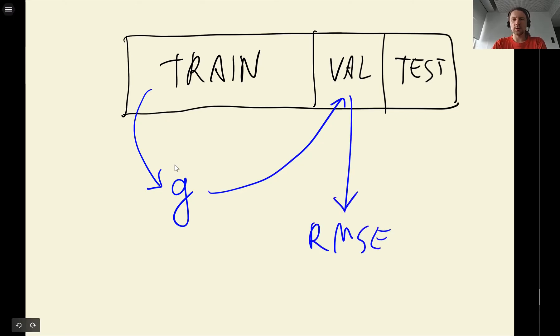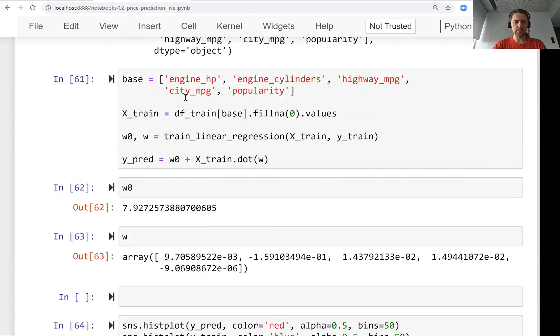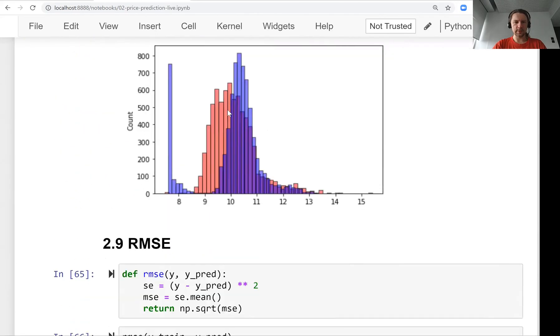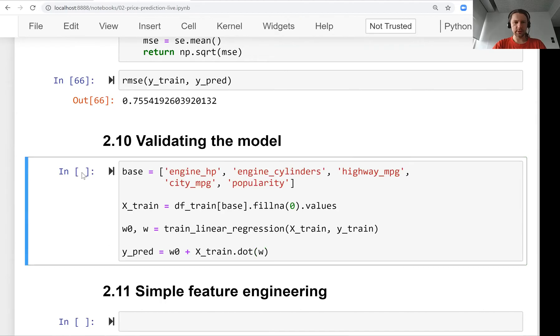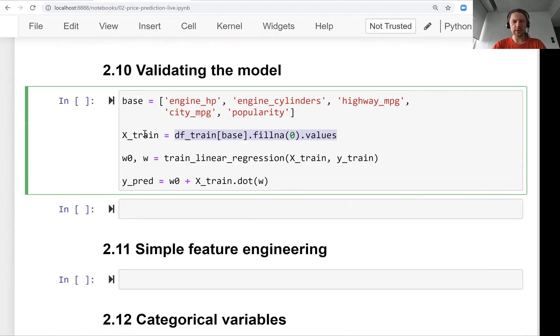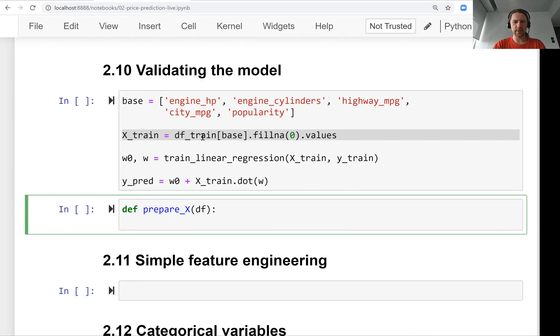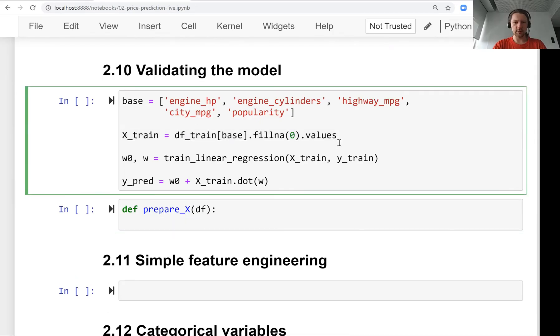So let's do this. First we'll get the code we wrote earlier. This is the code for training the model. This line here prepares our feature matrix X. A lot of things are happening here, so let's write a special function for that. We'll call it prepare_X which takes in a dataframe.